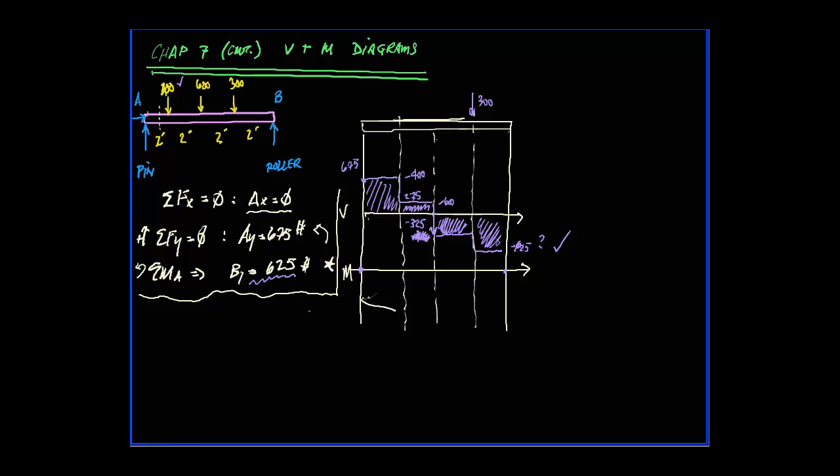Hey guys, Professor Doney back for part two of this problem we're working on here. We have some point loads equally spaced across this simply supported beam which has a pin and a roller at this end.